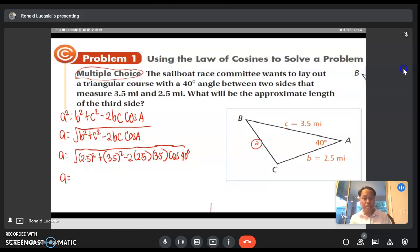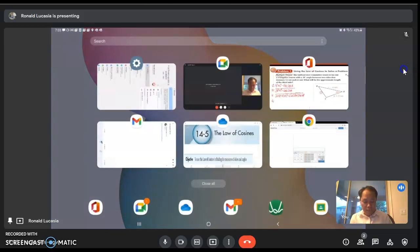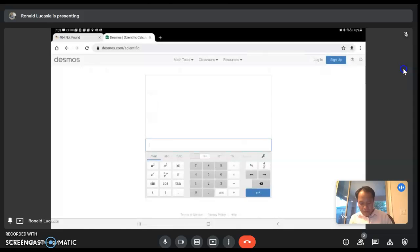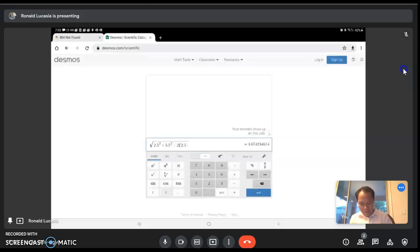Let's do it using the Desmos scientific calculator. You have the square root of 2.5 squared plus 3.5 squared minus 2 times 2.5 times 3.5 times cosine 40 degrees.